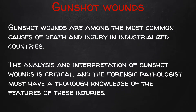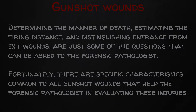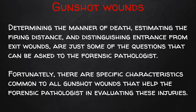Gunshot wounds are one of the primary causes of death and injury, and the analysis and interpretation of gunshot injuries is critical. The forensic pathologist must have in-depth knowledge of these injuries because of their importance in forensic practice. Determining the manner of death, estimating the range of fire, and distinguishing between entrance and exit wounds are just some of the questions that can be asked of the forensic pathologist. Fortunately, there are specific features common to all gunshot wounds that can help the forensic pathologist in evaluating these injuries.